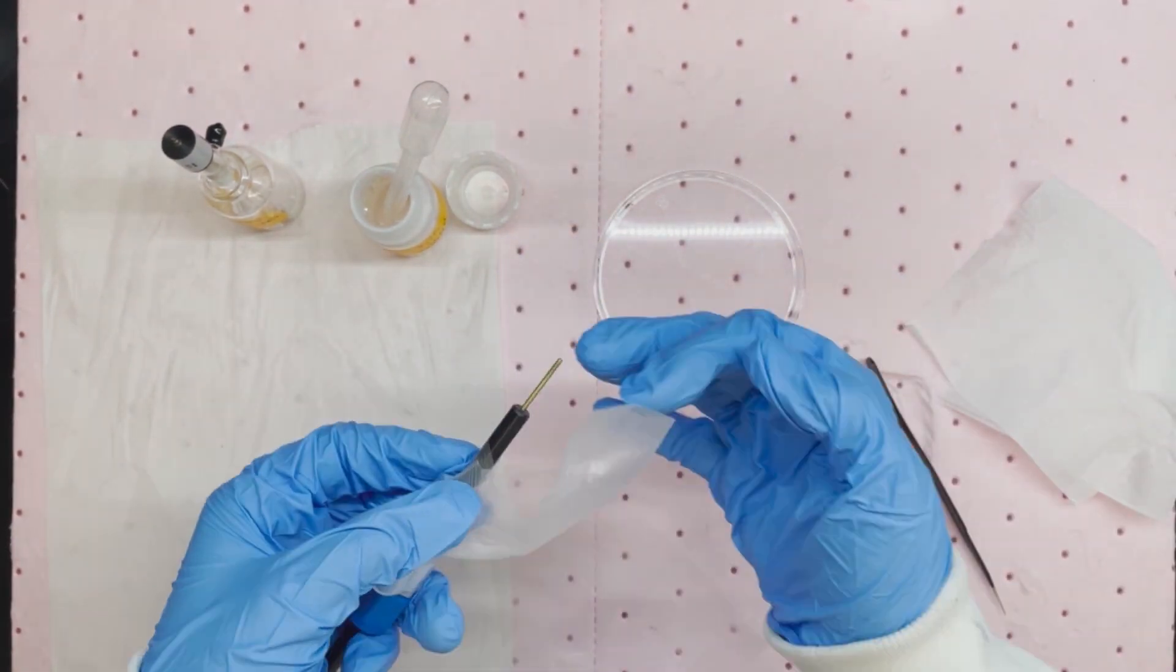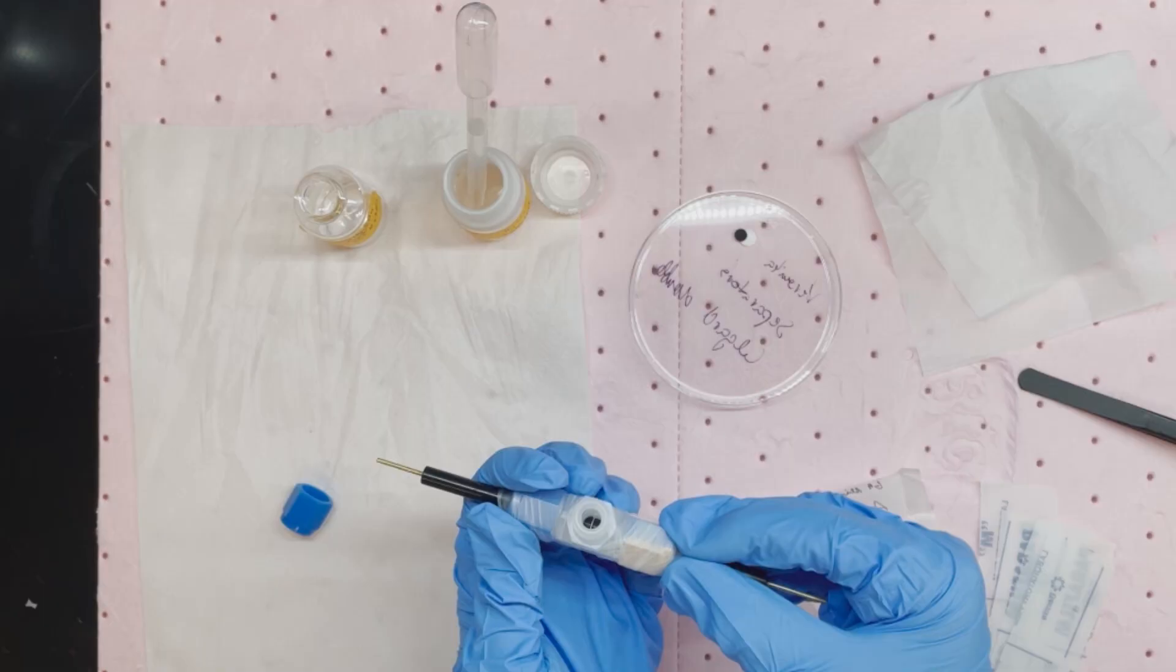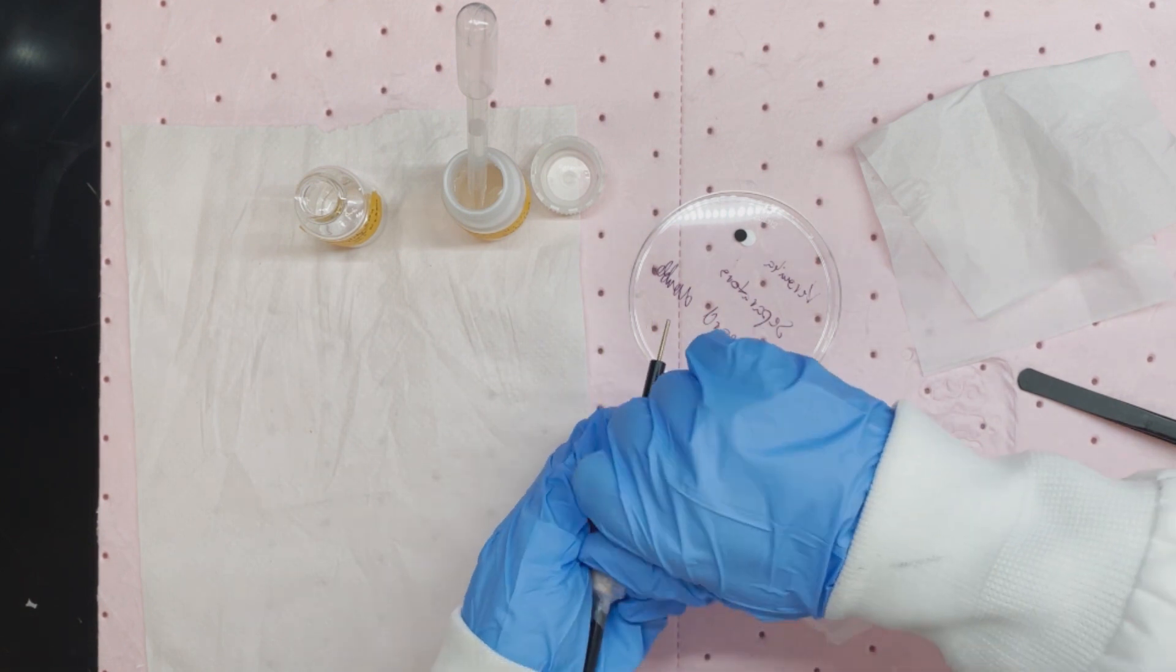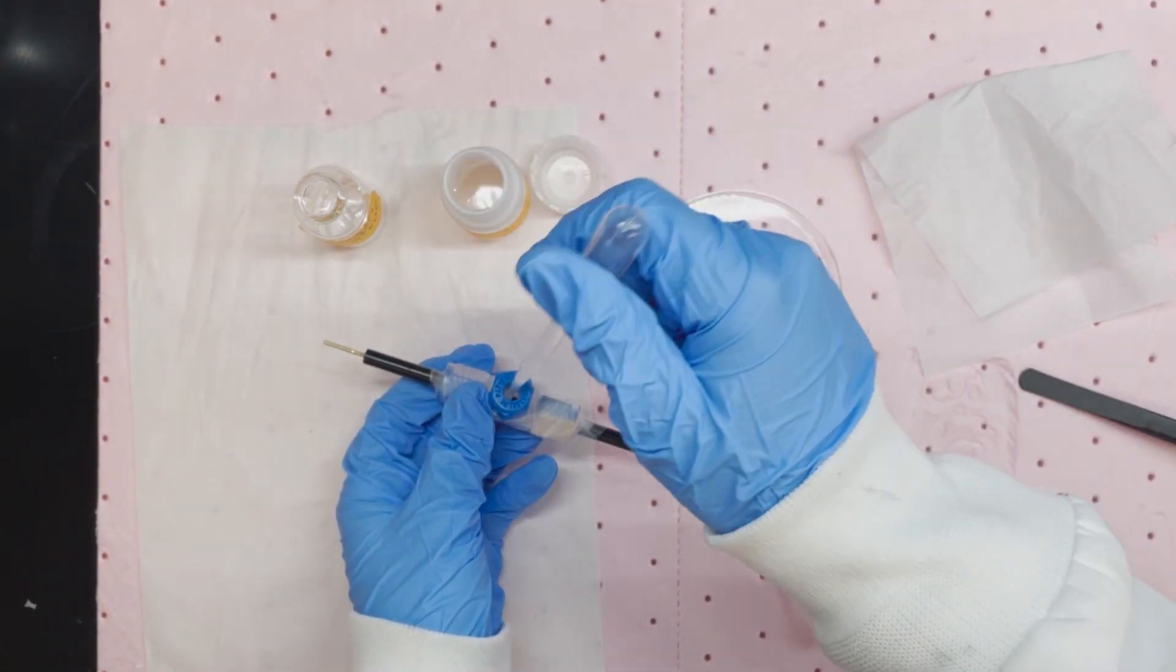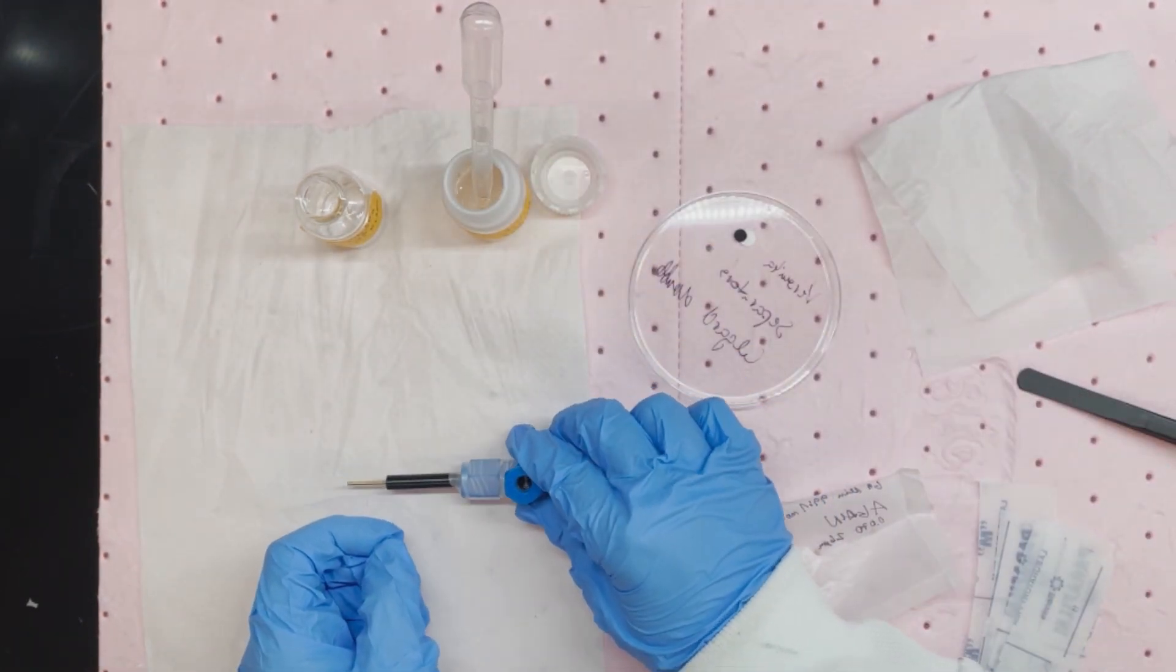Take two pieces of parafilm to seal the cell body in case of electrolyte leakage. Screw the cap for the third opening. Add electrolyte and tap against the solid surface to get rid of any bubbles trapped in the cell body.